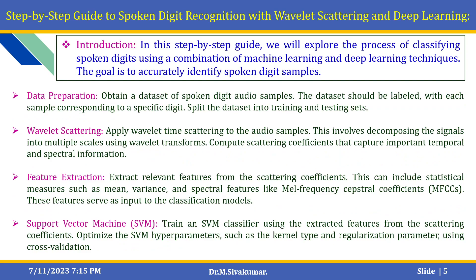The next step-by-step guide for this spoken digit recognition example covers data preparation. The dataset can be downloaded from GitHub — the spoken digit dataset is available and we will discuss it during the simulation. Obtain a dataset of spoken digit audio samples, labelled with each sample corresponding to a specific digit. Split the dataset into training and testing sets. Then apply Wavelet time scattering to the audio samples.